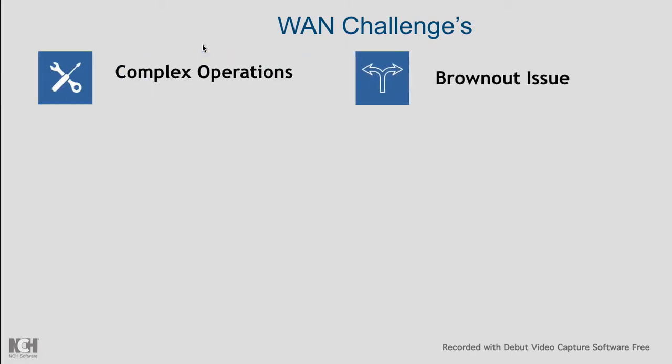Another key challenge is brownout issues — you have no insight into what is happening at the service provider level. The SP gives you only an SLA on link availability, but any performance issues or routing protocol convergence happening inside the service provider network can impact branch-to-data-center application performance, and that is completely beyond the enterprise's control.